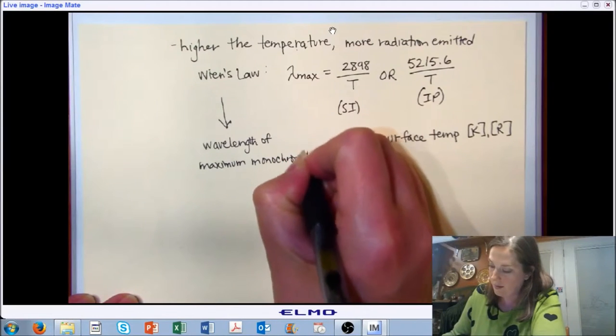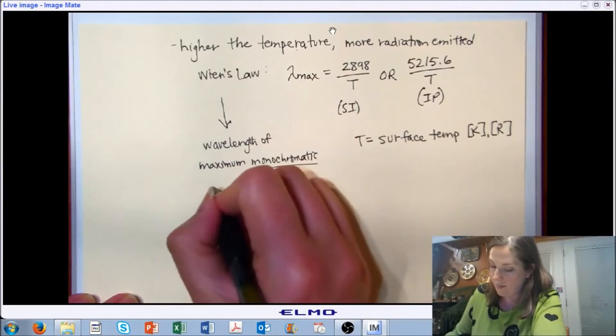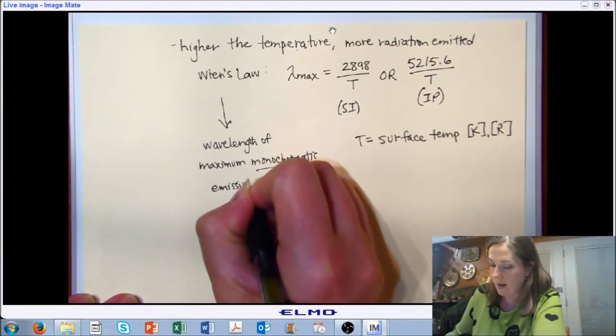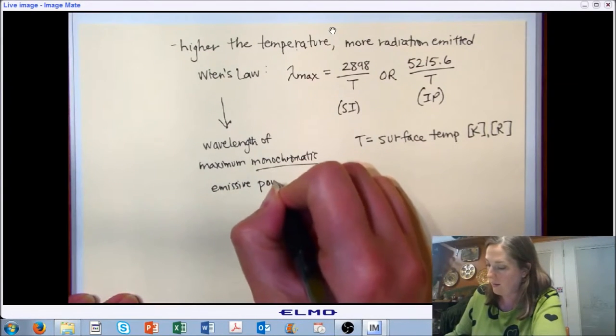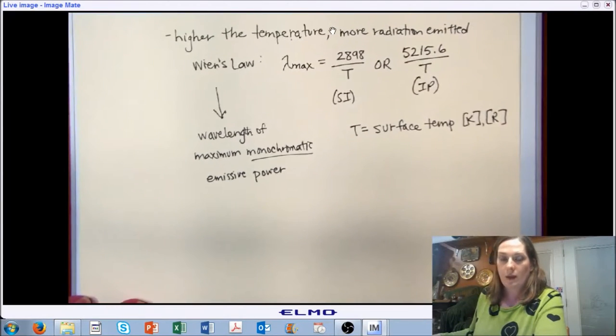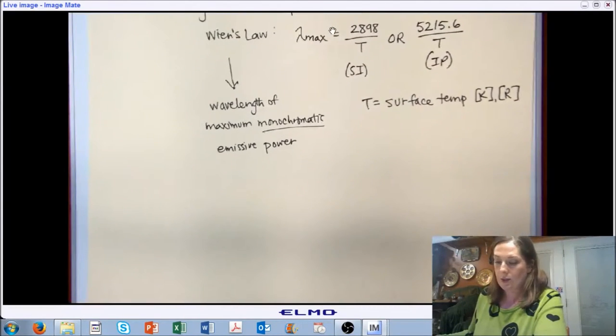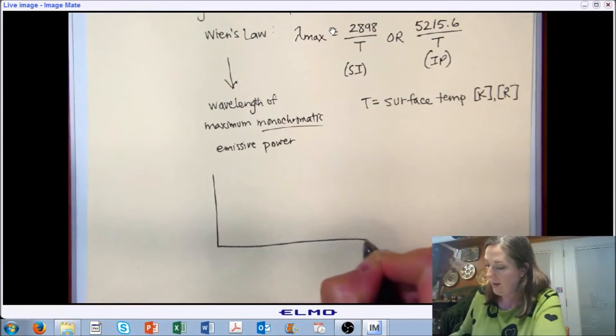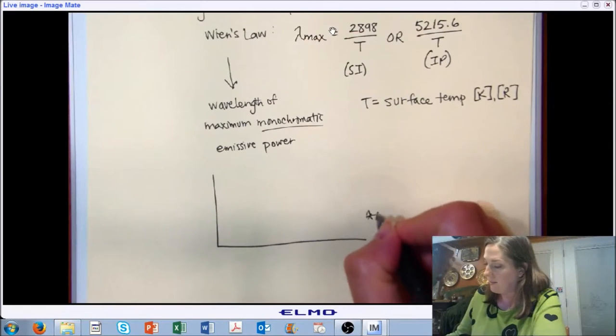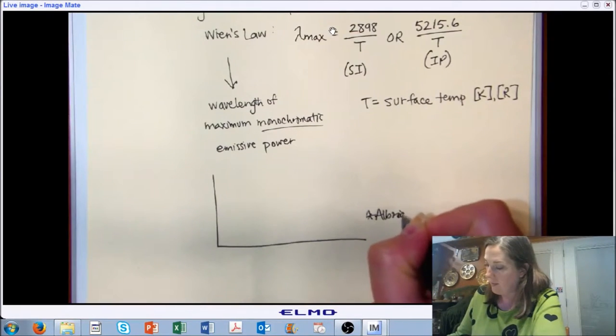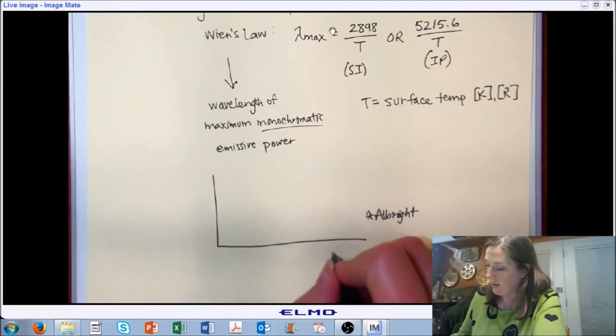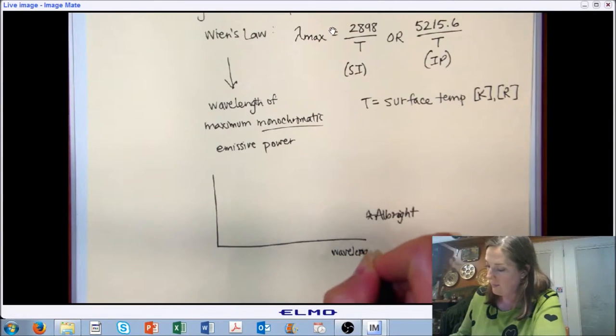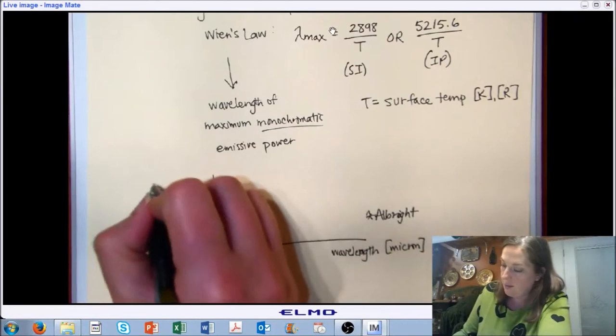Just to reiterate, what we're looking at here are the wavelengths of the maximum emissive power. Monochromatic, so not total emissive power, emissive power at a specific wavelength. Let's look at this relationship in a little bit of additional detail with a plot. This plot is taken from that presented in Albright. He's essentially looking at the trend between wavelength in microns and emissive power.